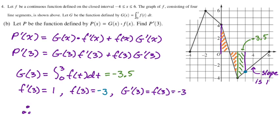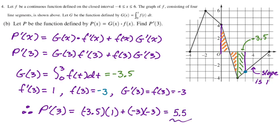Plug them all in. Do some arithmetic. So p prime of 3 is going to be, we got negative 3.5 times 1 and then plus negative 3 times negative 3. You could leave this if you wanted to, but that's 9 minus 3.5. So it's going to be 5.5 overall, but you could have left it. You don't need to simplify that. All right, let's take a look at the next one.